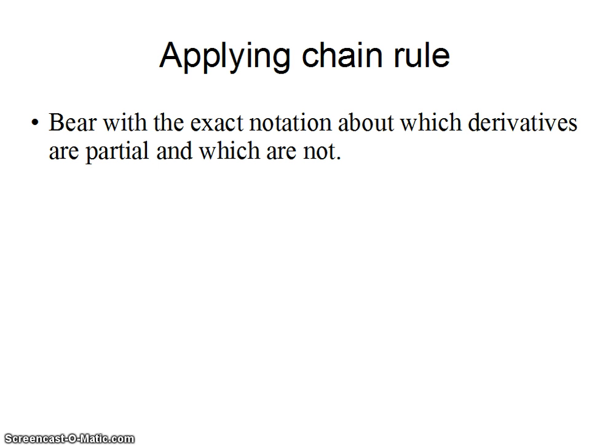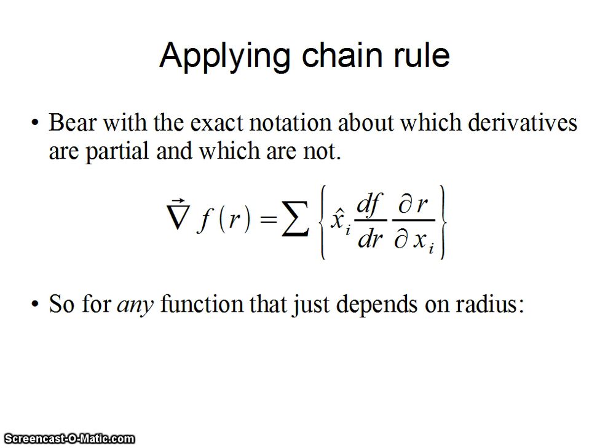When I apply the chain rule now, I'm going to have this mixed notation about which things are partial derivatives and which aren't. It really is correct. And it really is consistent with what I did before. But don't let it worry you, because in your first examples, these things might be a bit confusing. The gradient of a function that is just the function of radius, notice that's not r vector, it's just r, the distance, is the sum from i equals 1 to 3, of the unit vector times that derivative of the function with respect to r. And it's only a function of r, so it's a regular derivative, times the partial derivative of r with respect to x sub i.